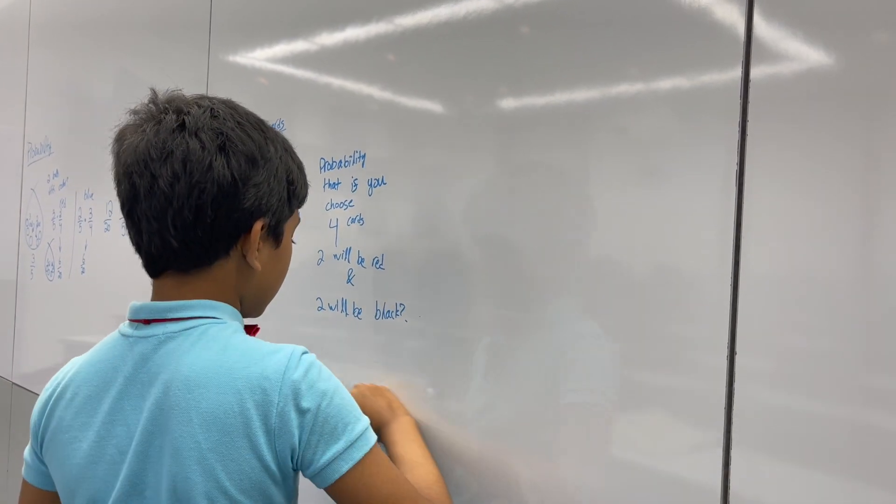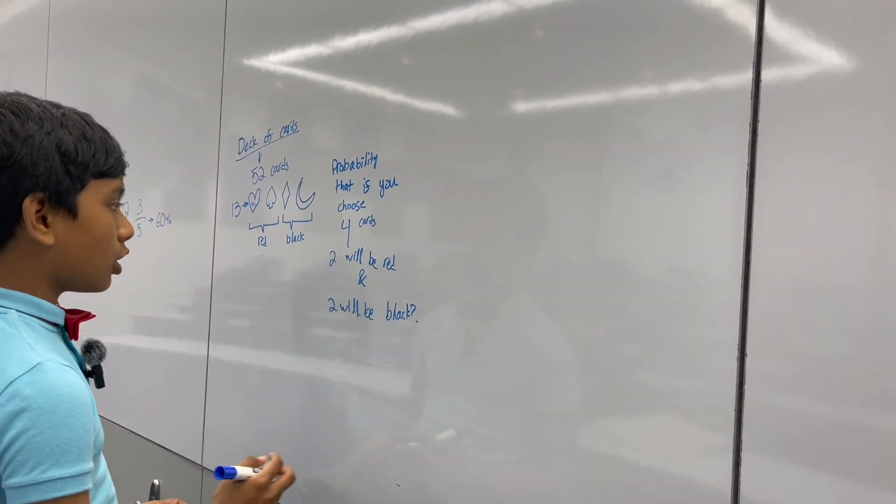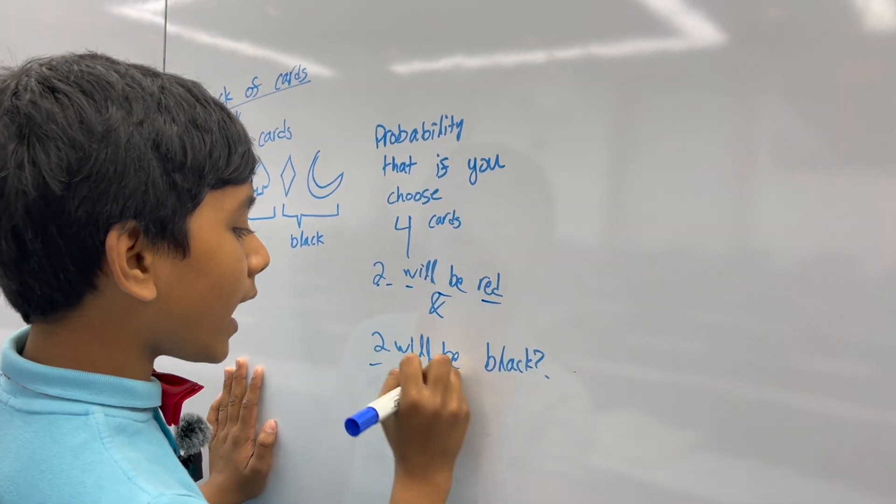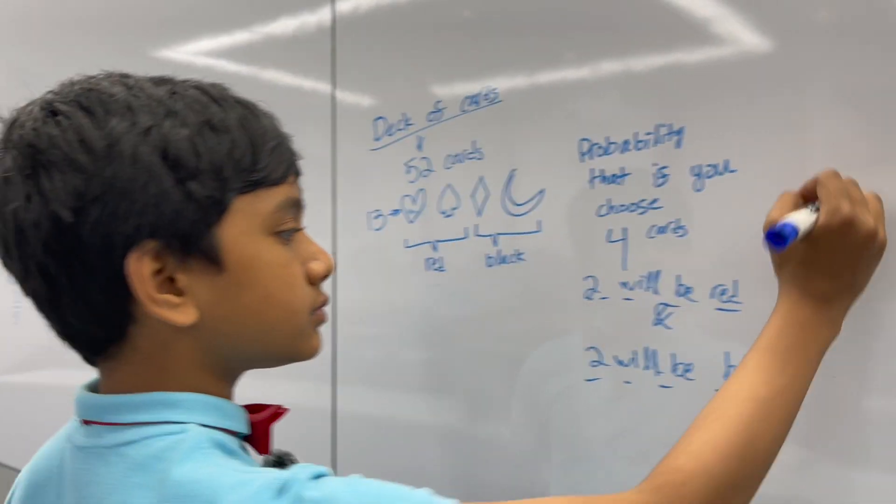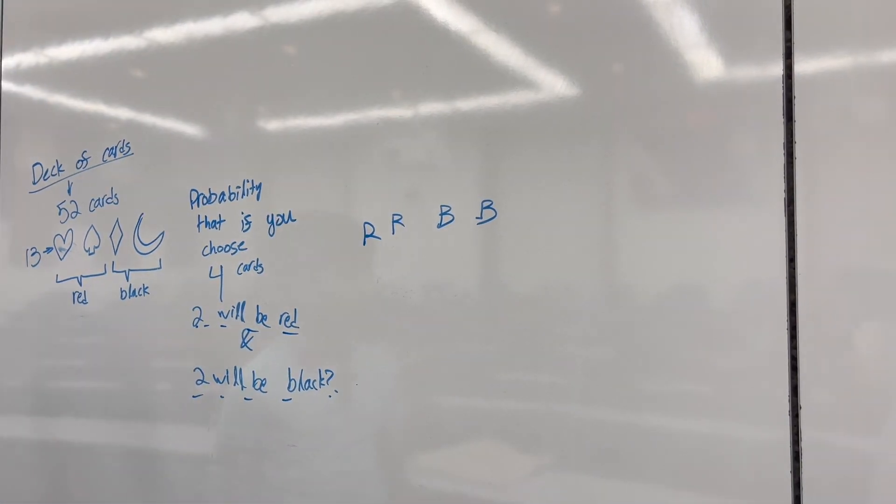Because, there are several different ways to arrange these cards. So, two will be red, and two will be black. Well, let's think about how we can arrange two reds and two blacks.